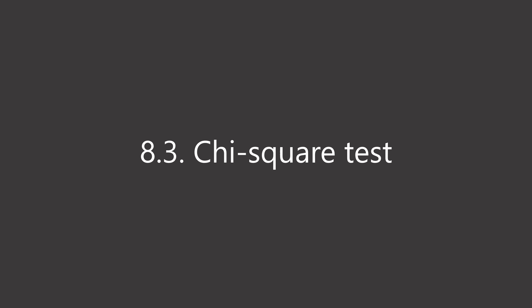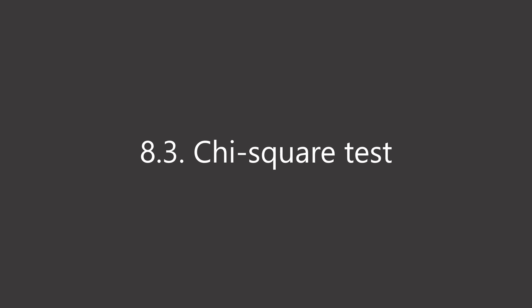Let me start with the explanation of the goodness of fit test. The goodness of fit test is a method for testing whether the observed frequency from sample data fits the population distribution. That is, it tests whether the sample data represent the population. It is often used in a sampling survey to confirm that the collected sample data properly represent the population. The most common method of the goodness of fit test is the Chi-Square Test.